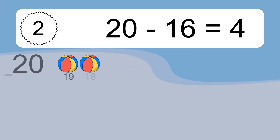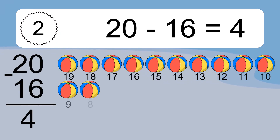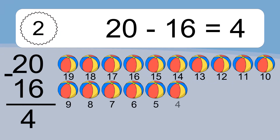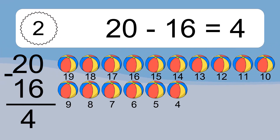Twenty minus sixteen equals what? Twenty minus sixteen equals four. Let's count it: 19, 18, 17, 16, 15, 14, 13, 12, 11, 10, 9, 8.